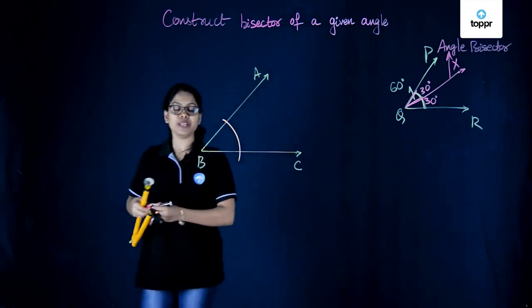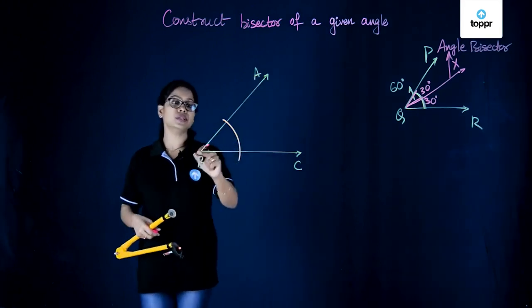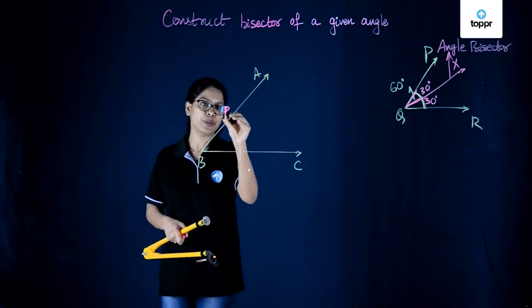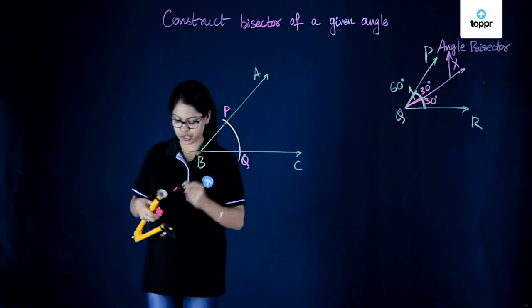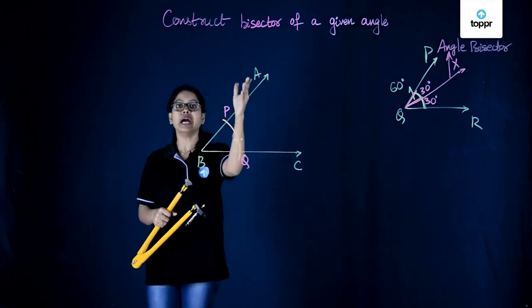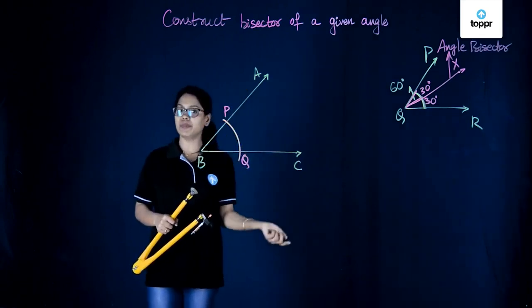Let's name the points at which this arc meets the lines. So if this point over here is point P and this point let's name it as point Q. So P and Q are the points where the arc touches the arms of the angle that is AB and BC.